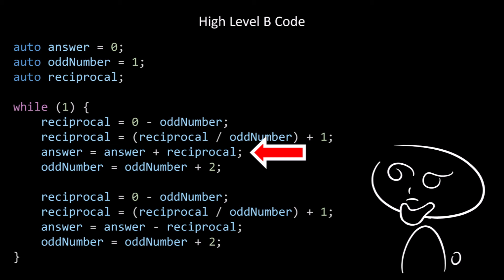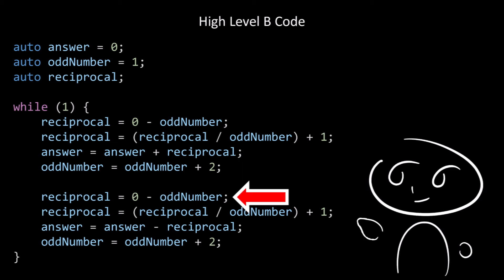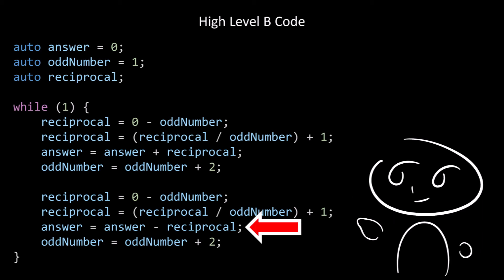We then set the answer equal to the answer plus the reciprocal, and add 2 to the odd number. Next, we again take 0, subtract the odd number, set that to the reciprocal, compute reciprocal divided by odd number plus 1, and this time subtract it from the answer. We then add 2 to the odd number again. This loop carries on forever and the answer gets closer to pi.